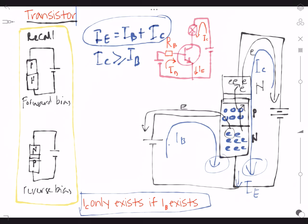IC exists if IB exists. So this is what is happening in transistor. It can also be drawn like this using the symbol of transistor here. So as I told you earlier, when there is IB there will be IC.